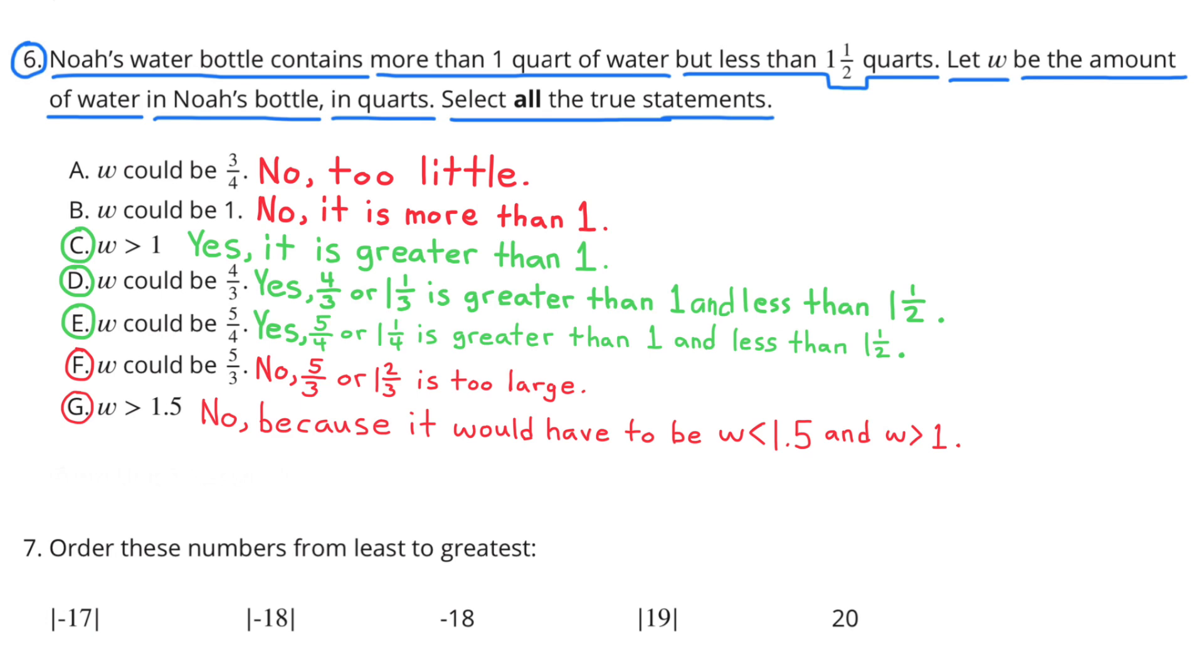E would also be true because five-fourths or one and one-fourth is greater than one and less than one and a half. F would not be true because five-thirds or one and two-thirds is too large. And G would not be true. It would have to be W is less than one and five-tenths and W is greater than one.